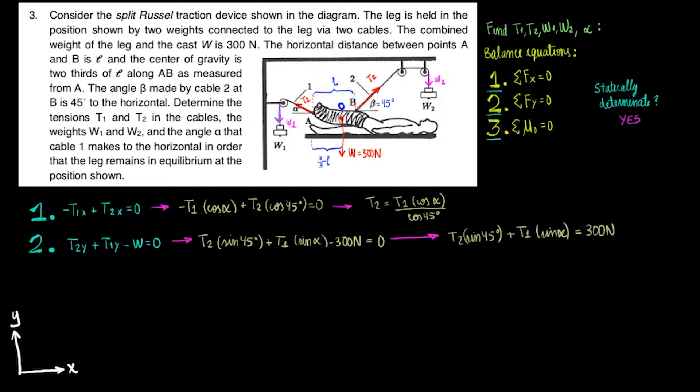For equation 3, remember we are taking the moment about O. This means that the moment due to the weight would be zero since the force line of action goes through O. Then the moment due to tension T1 is the vertical component of T1 times two-thirds L. The moment due to T2 is the vertical component of T2 times one-thirds L.